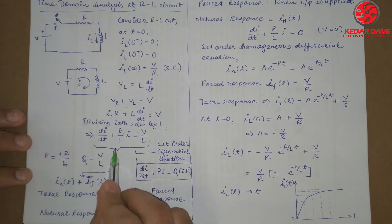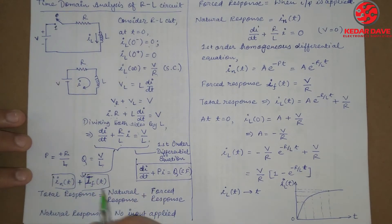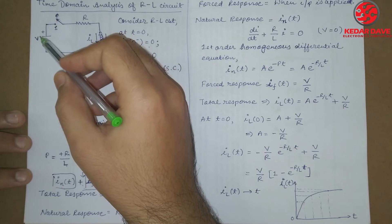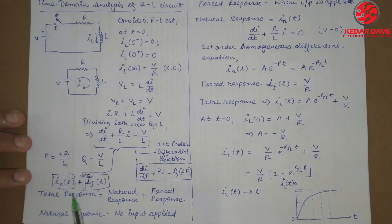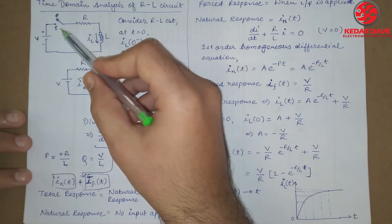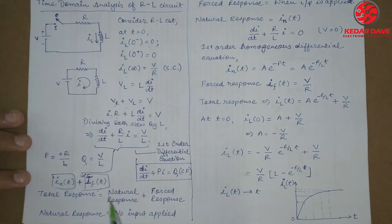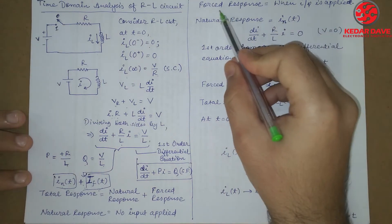So here there are two kinds of responses. The first is the natural response and the second is the forced response. The forced response is due to the battery effect — because of the connected battery. The natural response is considered as the response without the battery — if no battery is connected. The total response is the addition of the natural response and the forced response.